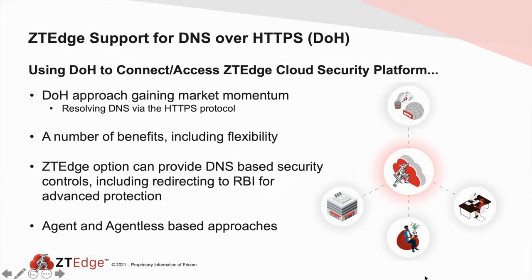In this session we're going to talk about using ZTEdge Web Isolation in conjunction with DNS over HTTPS. DNS over HTTPS, or DoH, has some advantages. Firstly, the DNS traffic is encapsulated over standard HTTPS using port 443. Using this method means that the transmitted data is completely hidden from hackers, making it impossible to intercept or alter the data in any way.